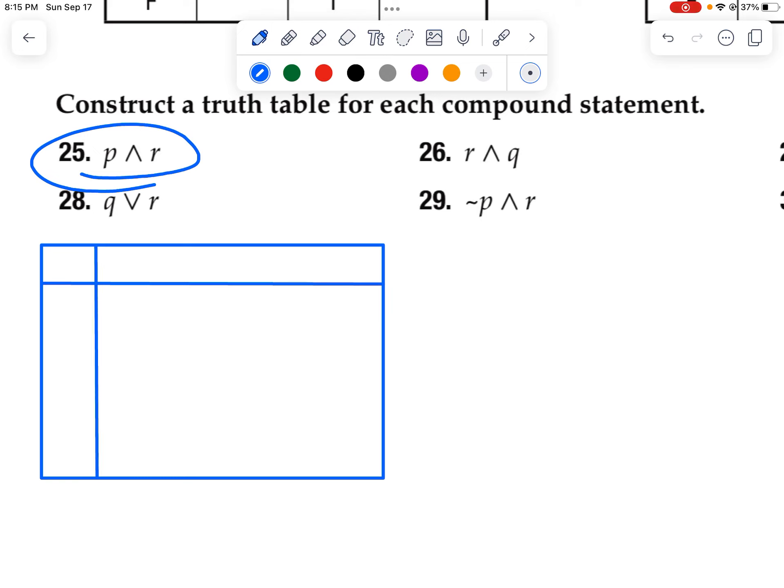Well, the first thing I need to do is set up a table that has room for P and R, and also has room for not P and not R. I'm going to leave one space at the end for the question being asked. In this case, it's asking the question, what is the truth value of P and R, that conjunction?